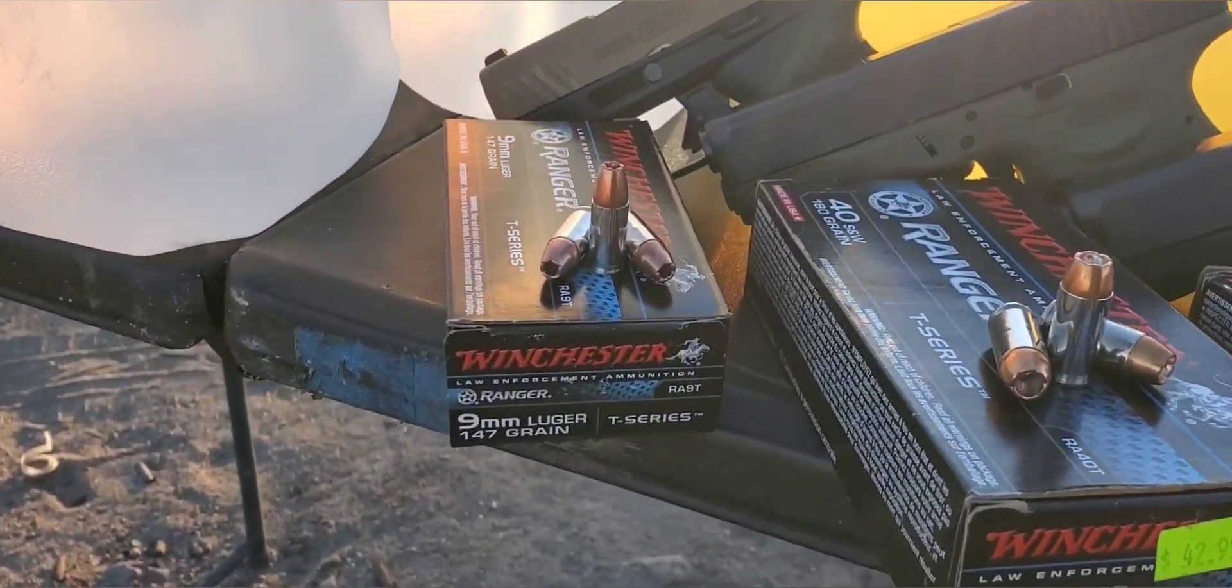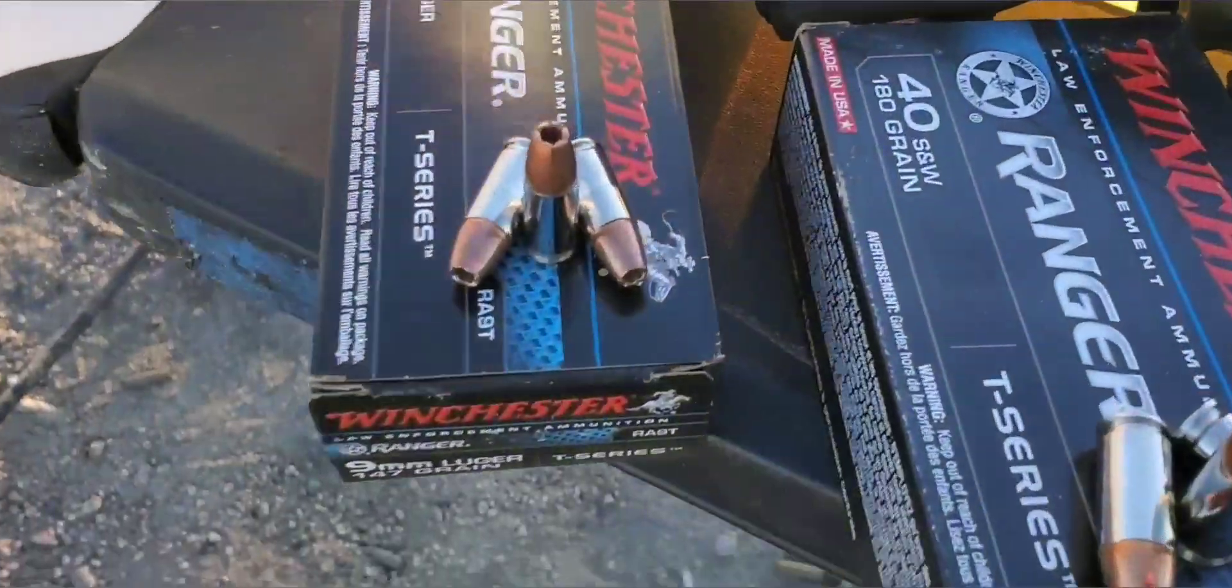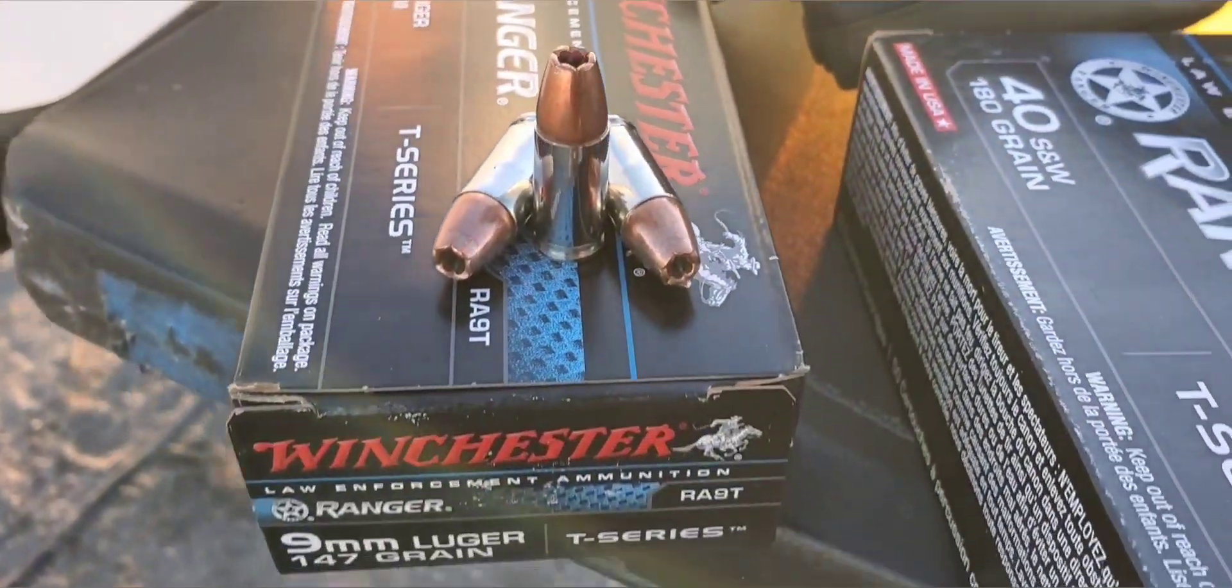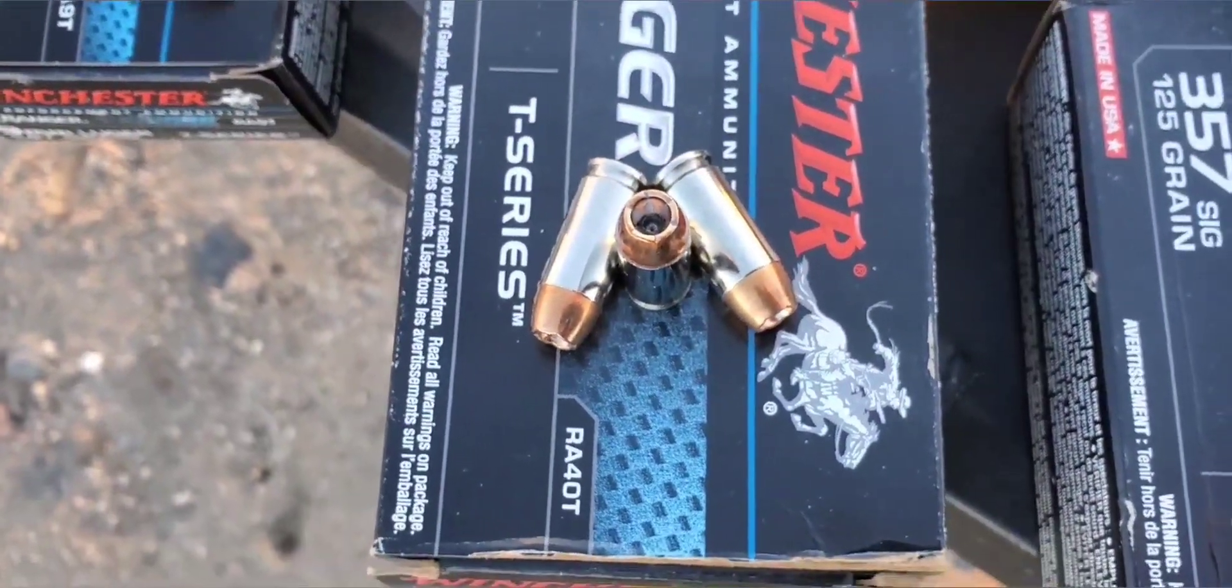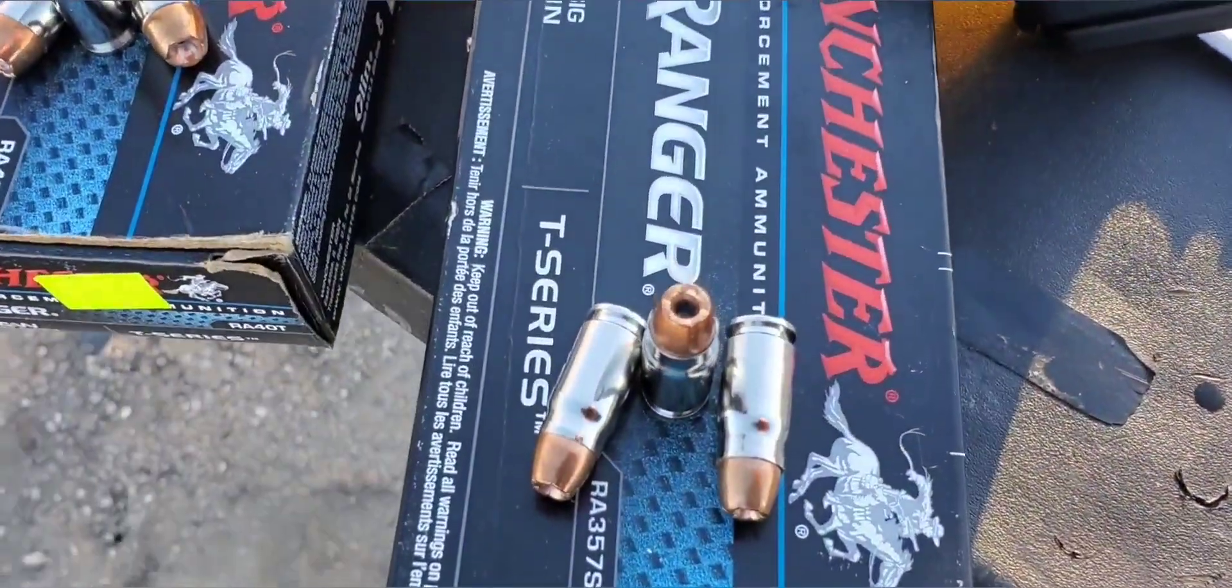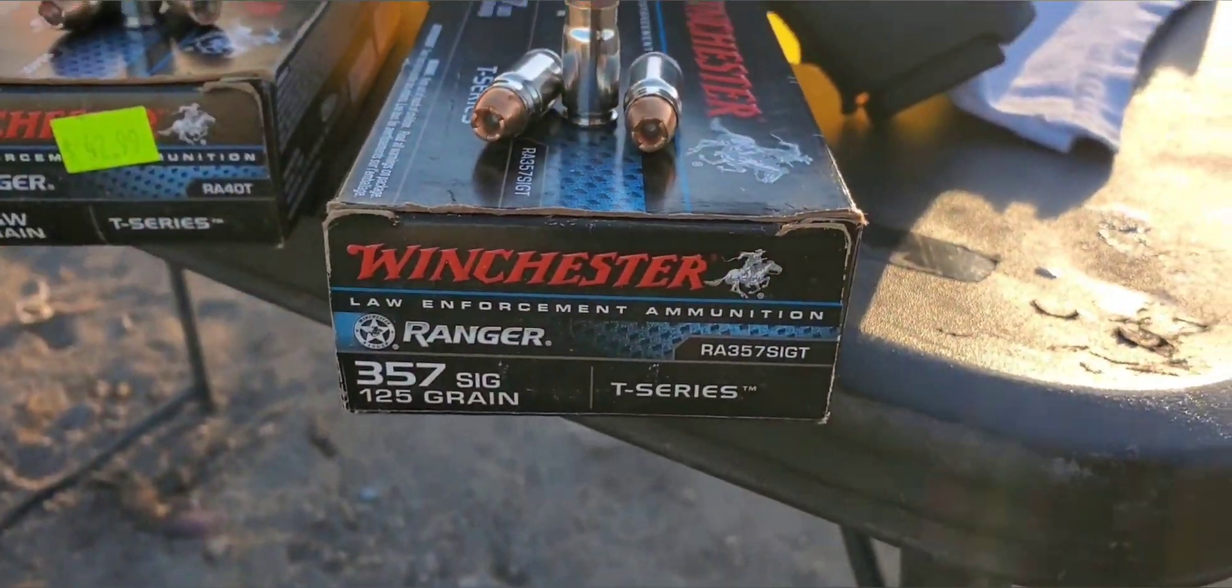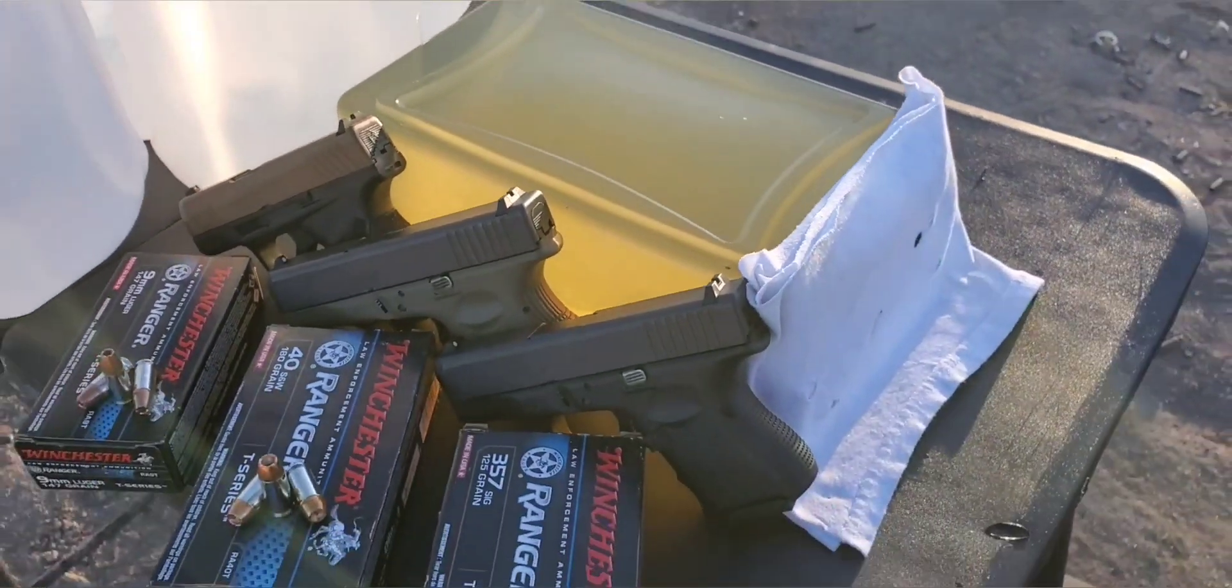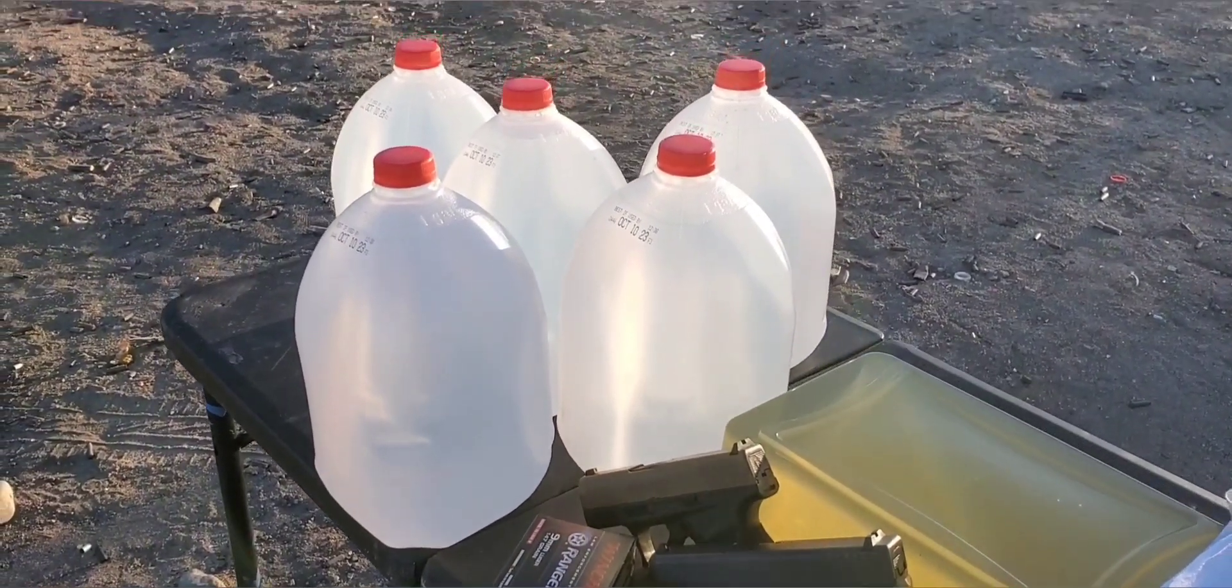The round we're going to be testing out today is the Winchester Ranger T-Series. So we have the 9mm, that one is 147 grain. We have the 40 Smith & Wesson, that is 180 grain. And our 357 Sig, that one is a 125 grain. And we're going to be going in the gel today. So we do have our four layers of cotton t-shirt on that. It is a 10% block. And we do have jugs just in case we get some pass-throughs on these.